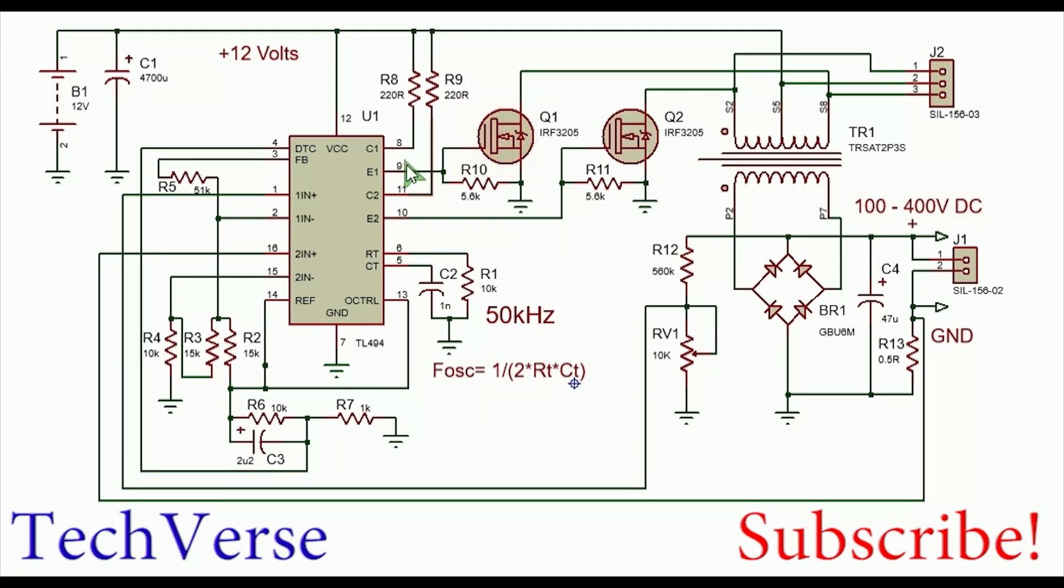When emitter pin 9, E1, is high, MOSFET Q1 conducts and current flows from the 12 volt rail through the first primary half winding through the MOSFET into ground. When it gets low and E2, or pin 10, gets high, Q2 will conduct and current flows through the other half primary winding. Push-pull inverters and topologies usually have a high wattage output capacity.